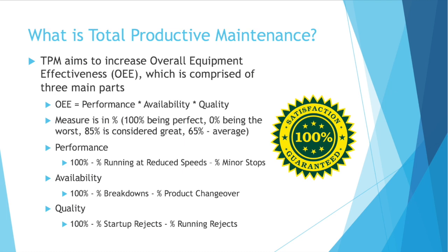In reality, 85% is considered amazing — best in class — whereas 65% is a bit more realistic for a good company. Maybe not necessarily that good, but definitely more of an average.